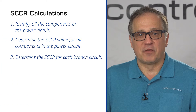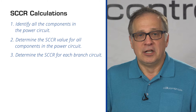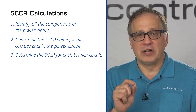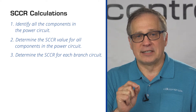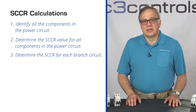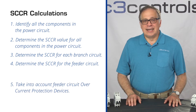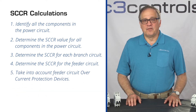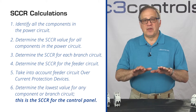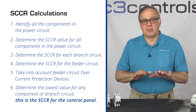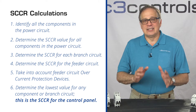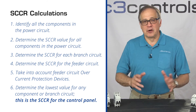Then we determine the SCCR for each branch circuit — the lowest component SCCR is the branch circuit SCCR. Next, determine the SCCR for the feeder circuit, taking into account the feeder circuit overcurrent protection devices. Determine the lowest value for any component or branch circuit; this is the SCCR for the control panel.